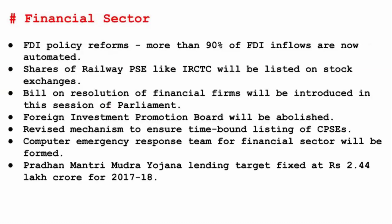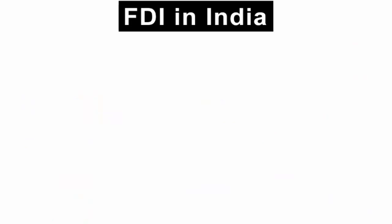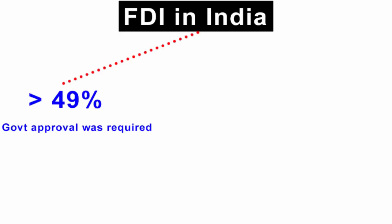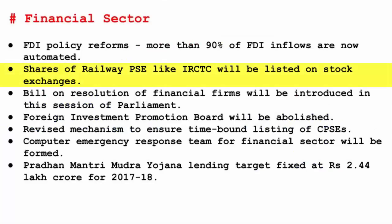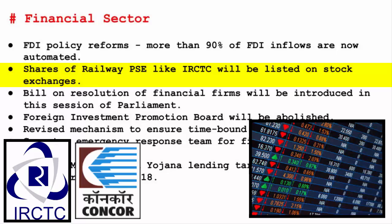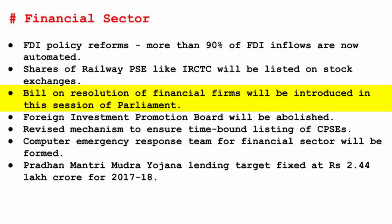Now we will look at the financial sector. Under FDI policy reforms, more than 90% of FDI inflows are now on the automatic route. This has opened up sectors like defense, civil aviation, food, retail, and pharmaceuticals to more foreign investments and complete foreign ownership. Earlier, FDI beyond 49% was permitted through an approval route under certain conditions, but now 90% is under the automatic route, meaning no government intervention. Shares of railway PSEs like IRCTC will be listed on stock exchanges so their true market value will be unlocked, generating more revenue and enabling higher investment decisions.